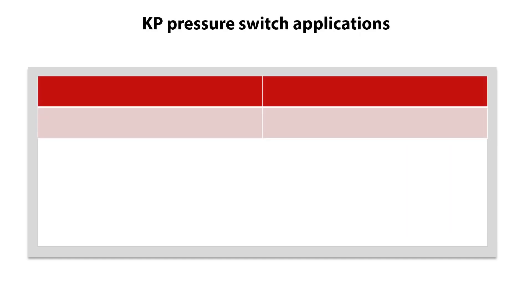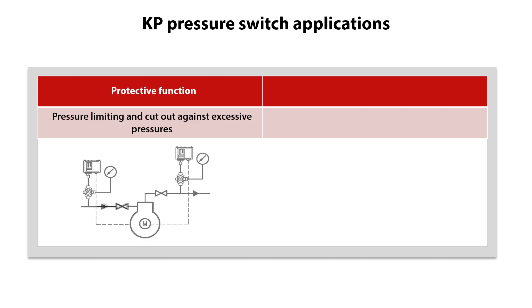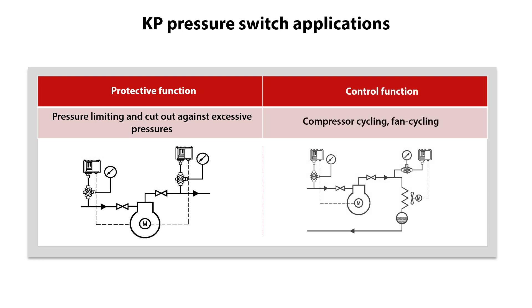The KP Pressure Switches are designed to give protection against excessively low suction pressure or excessively high discharge pressure. They are also used for starting and stopping refrigeration compressors and fans on air cooled condensers.